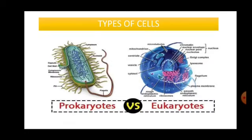Moving on to the types of cells. There are just two basic types of cells based on how they are formed: prokaryotic cells and eukaryotic cells. As you can see in the diagram, they look very different from one another because they are designed differently. 'Prokaryotic' comes from 'pro-' meaning primitive or basic, and 'karyon' meaning nucleus. Similarly, 'eukaryotic' comes from 'eu-' meaning new or advanced, and 'karyon' meaning nucleus. Let's compare these two.